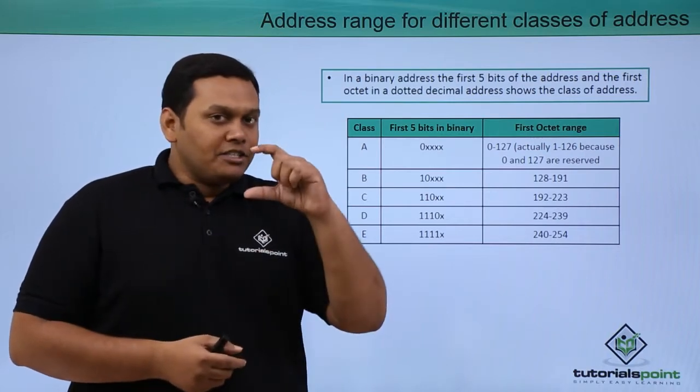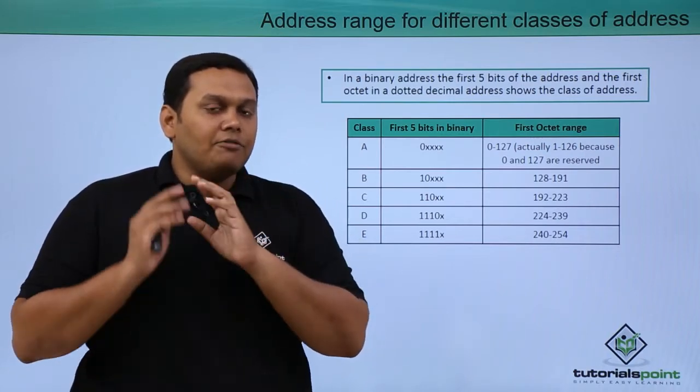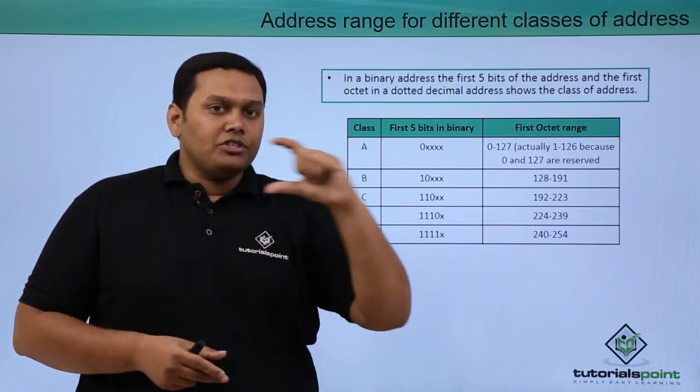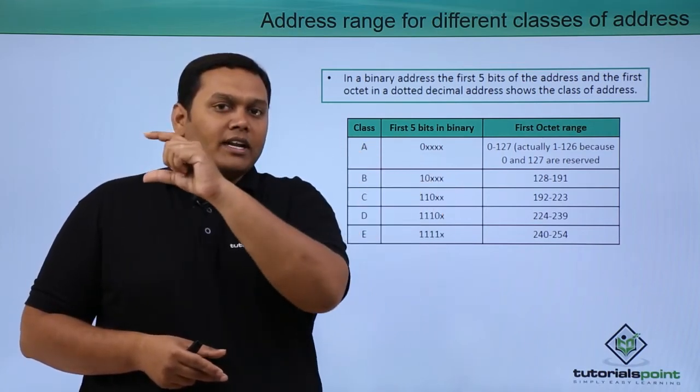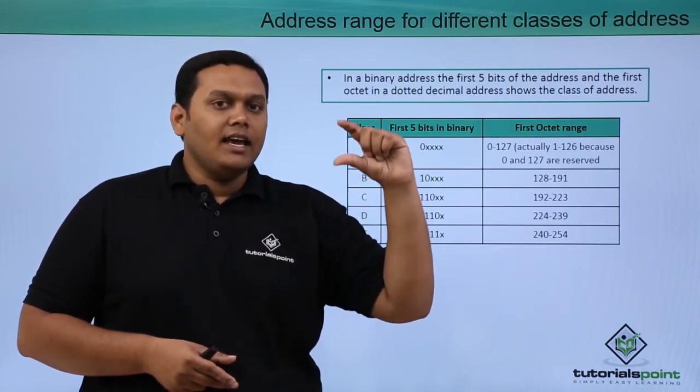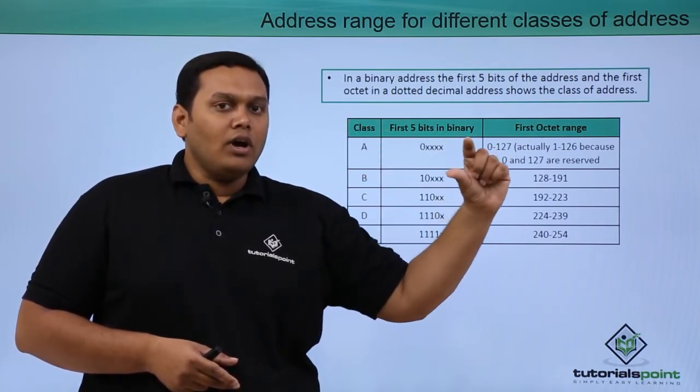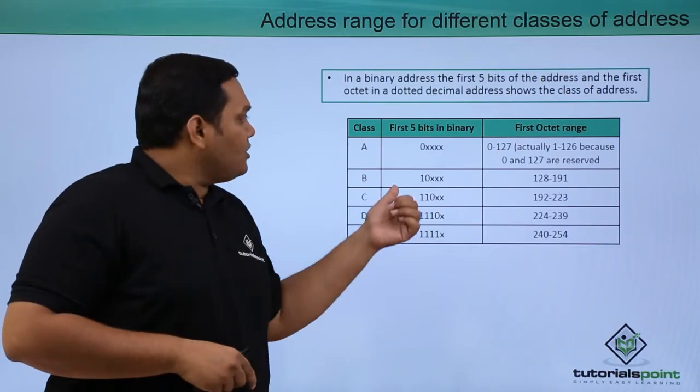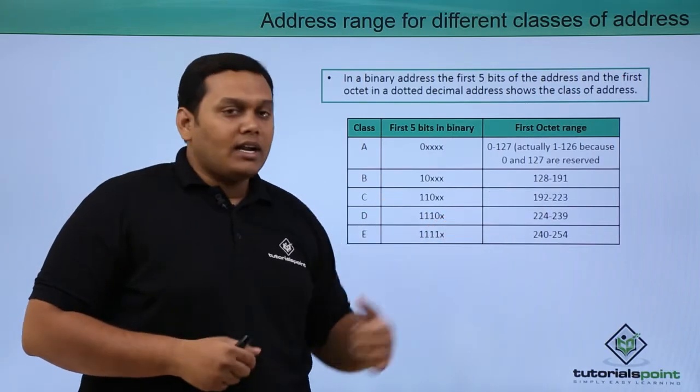Coming to class B, the first bit in the octet is a fixed value of 1. As we saw, from the first 8 parts: 128, 64, 32, 16, 8, 4, 2, and 1. So here the first bit is 128. So the range starts from 128 to 191.